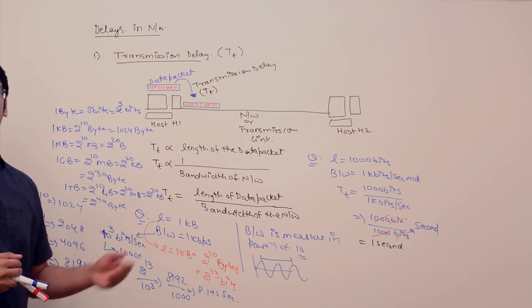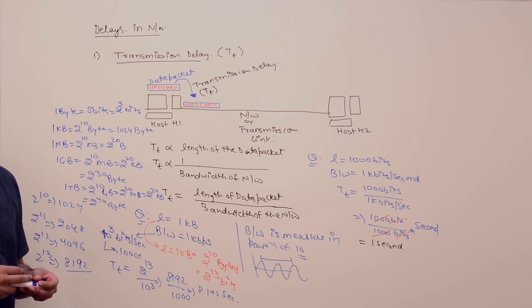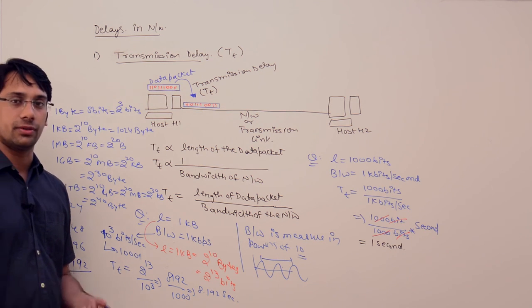This is called transmission time. Now let us discuss the next type of delay, which is called propagation time.